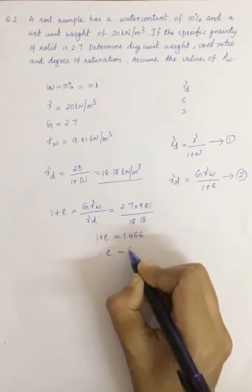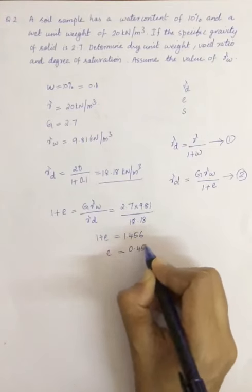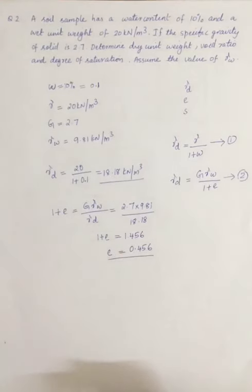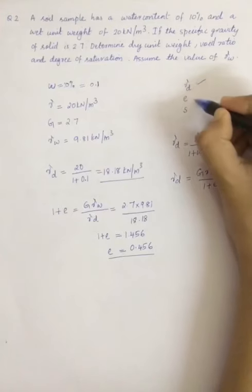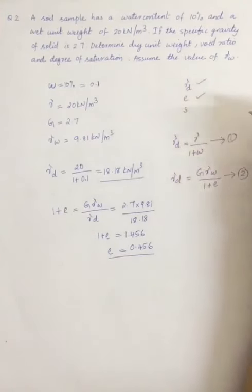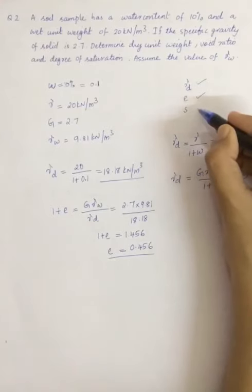So we got dry unit weight, we got void ratio. Now the third term that we need to find is degree of saturation.